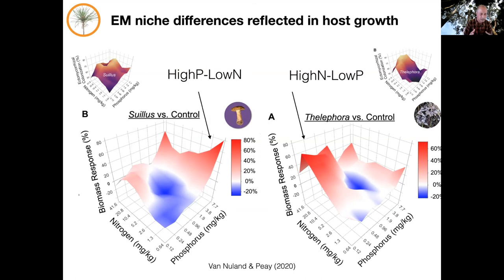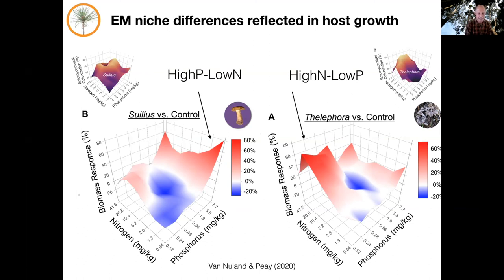This together suggests that the niche specialization of the fungi is directly reflected in the mutualistic niche space that their plant host is able to occupy. Some of you might expect that because these two fungi have really complementary nutrient niches, the host could maximize its environmental niche space by having a diversity of partners and switching associations depending on the environmental context.